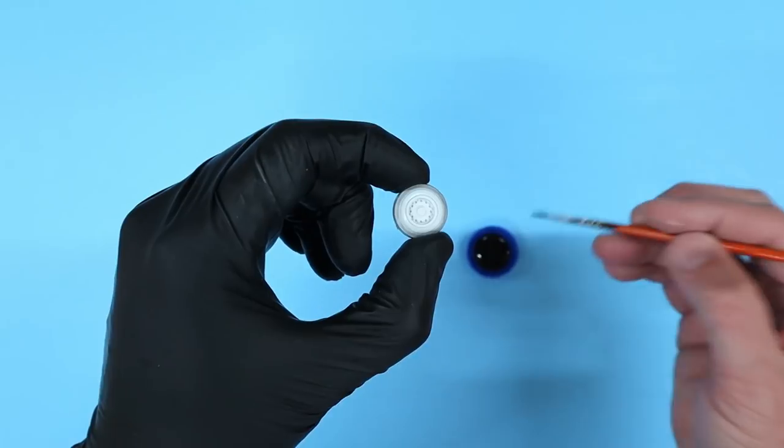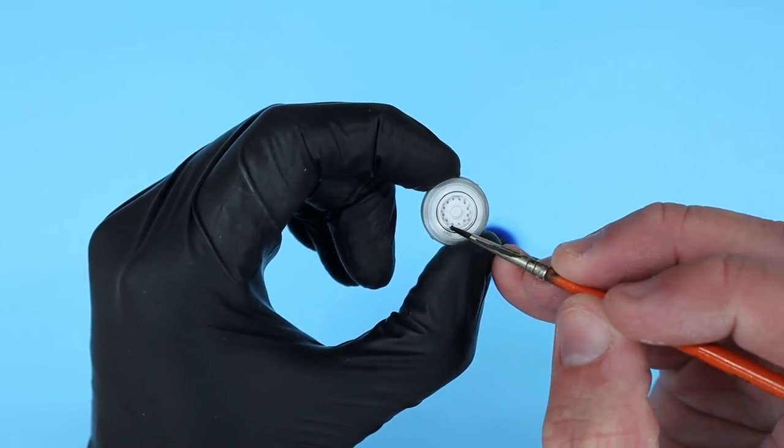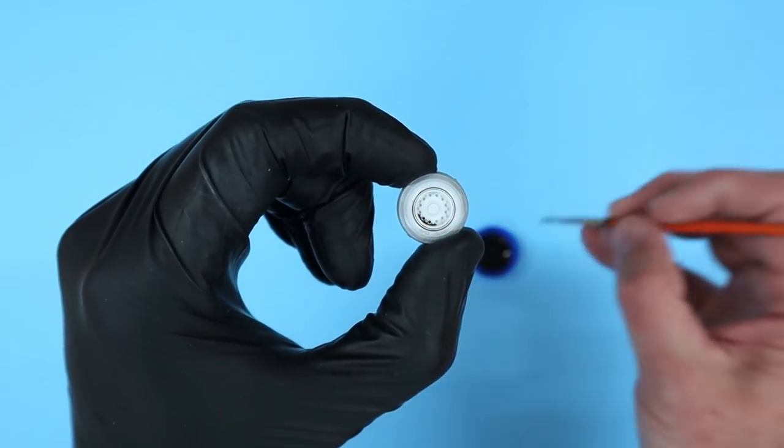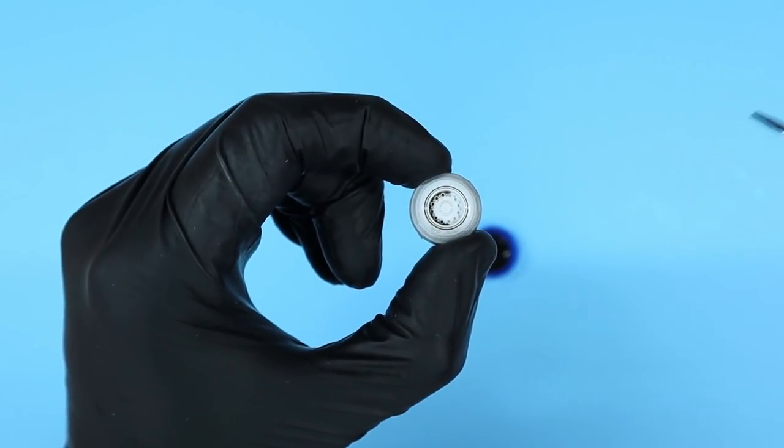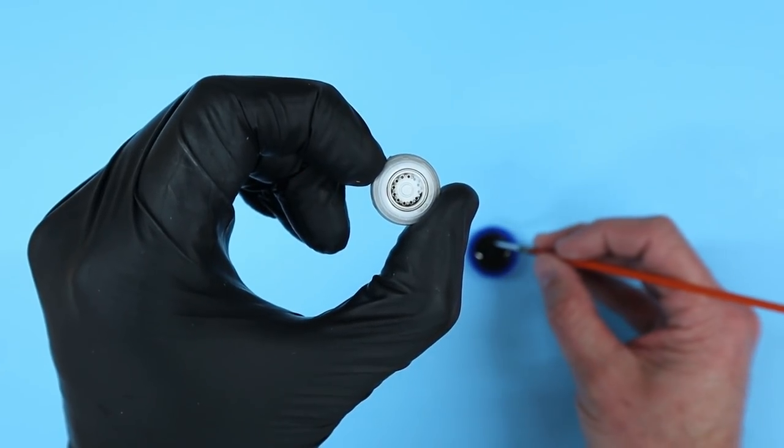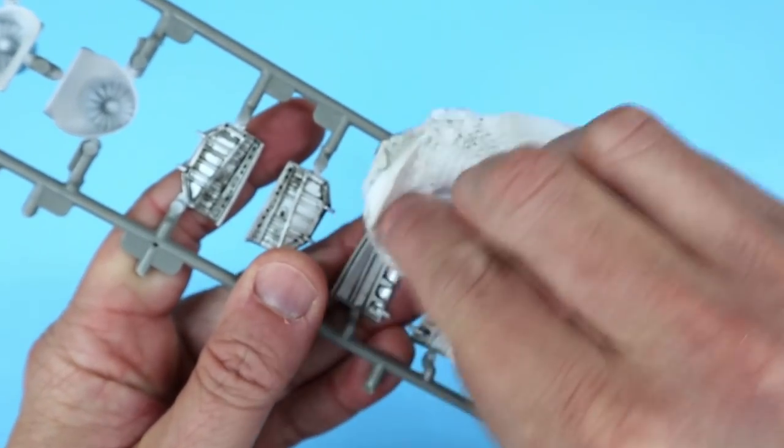While I waited for the Tamiya putty to dry, I jumped back over to the wheels and landing gear parts and airbrushed those with Tamiya's gloss white. I then mixed up an oil wash using raw umber and black, thinned with mineral spirits, and added that to all the wheels and landing gear components. When the wash had dried, I wiped away the excess using a clean paper towel.